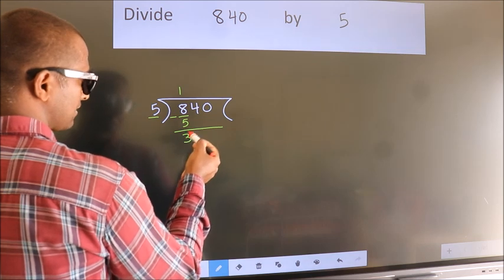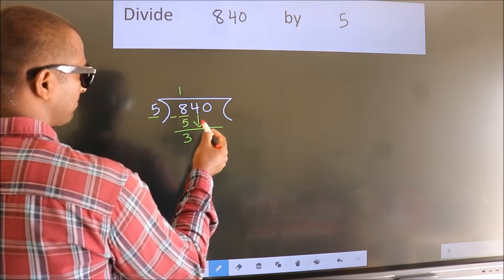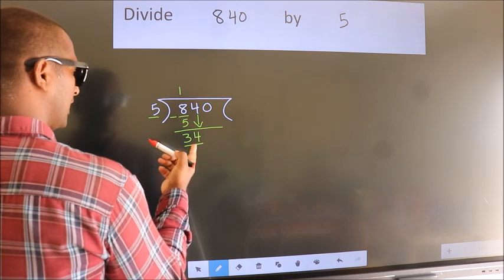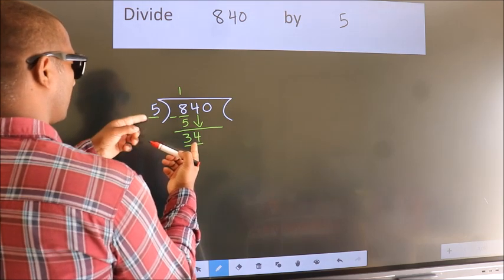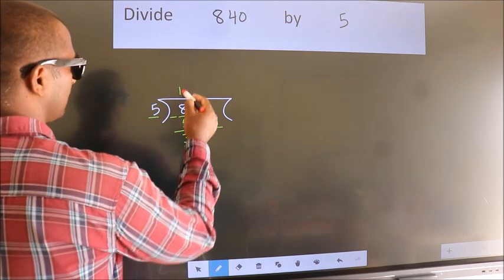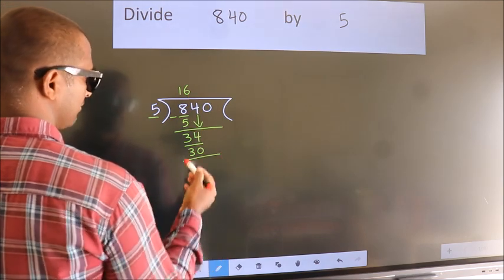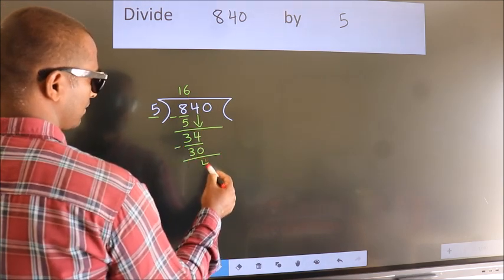After this, bring down the beside number. So 4 down, so 34. A number close to 34 in 5 table is 5, 6, 30. Now we subtract. We get 4.